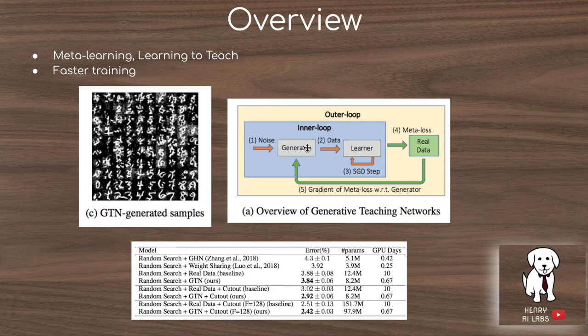This inner loop is evaluated on the outer loop of the real data — the real CIFAR-10 and MNIST data. This is how the meta-learning algorithm is optimized: it learns to produce a dataset that can be used to train these classifiers for MNIST and CIFAR-10 classification.